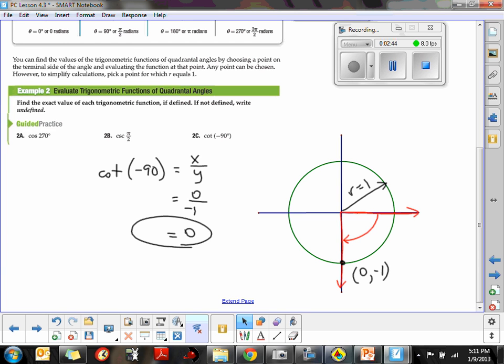So, quadrantal angles, once you understand what you're going to do, they are the easiest ones that you can calculate. They're either 1, 0, or -1, and undefined.